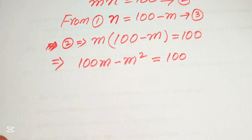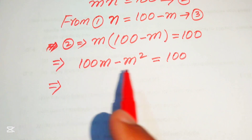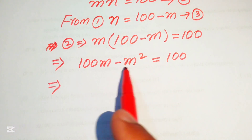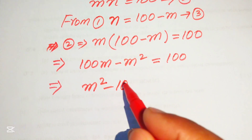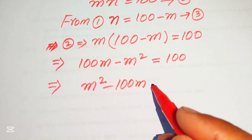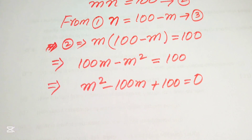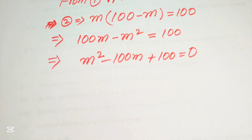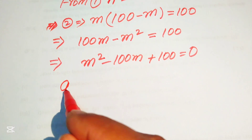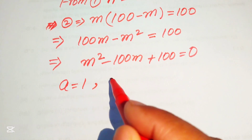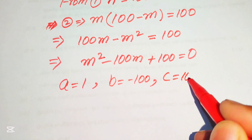You can see that this is a quadratic equation but not in standard form, so now we convert it by moving terms to the right hand side: m squared minus 100m plus 100 equals zero. This quadratic is in m, and now we use the quadratic formula to solve it. The coefficients are a equals 1, b equals minus 100, and c equals plus 100.